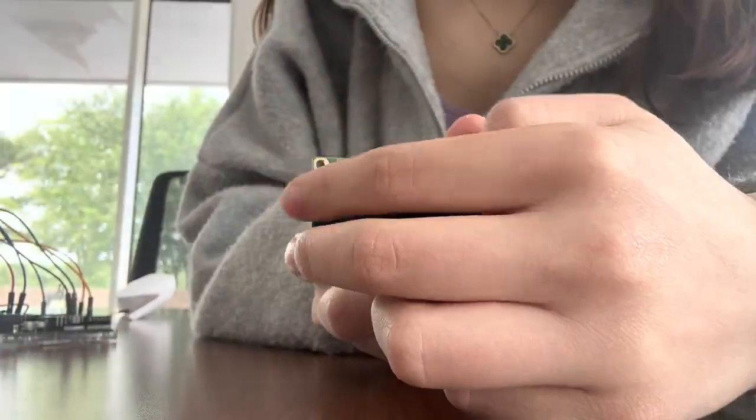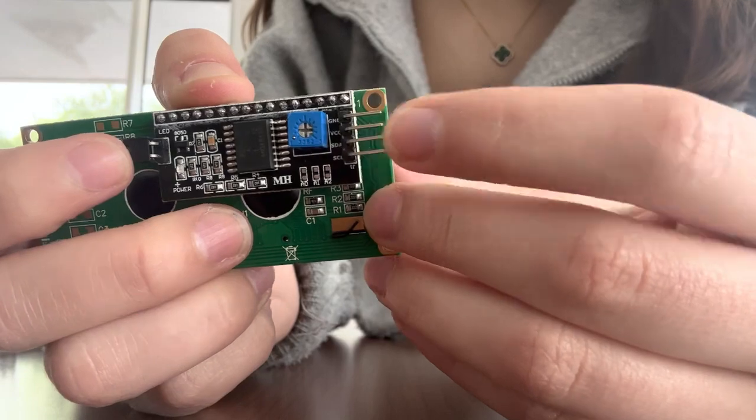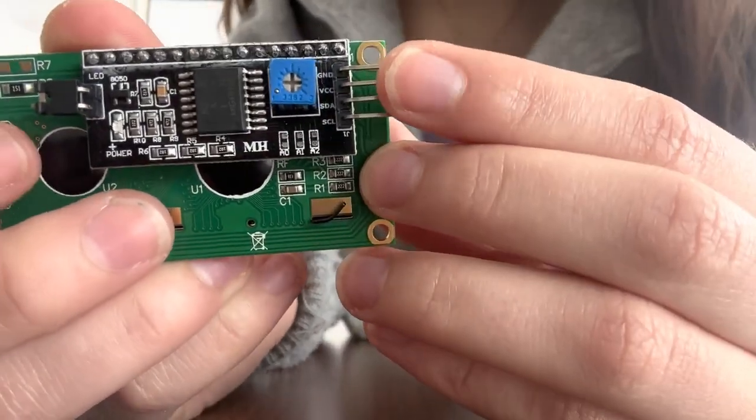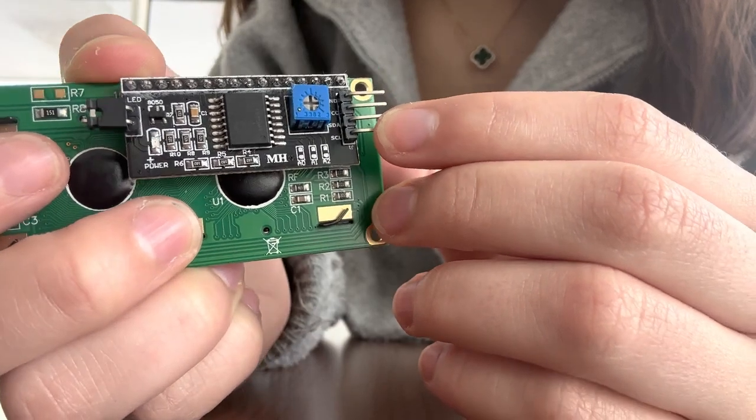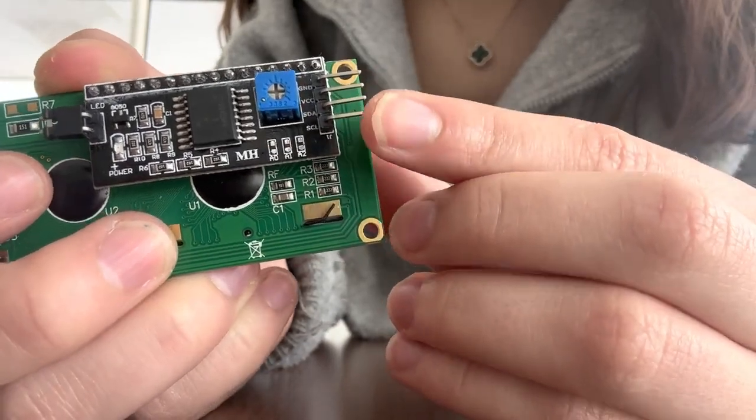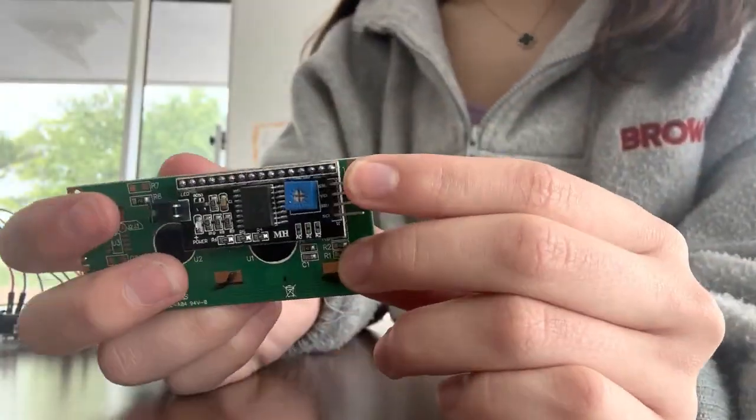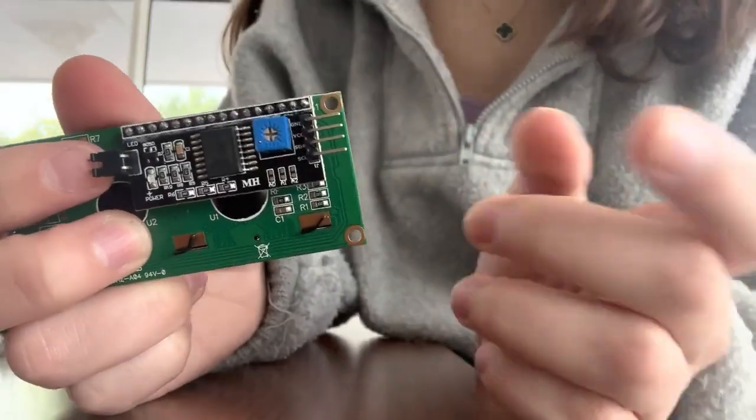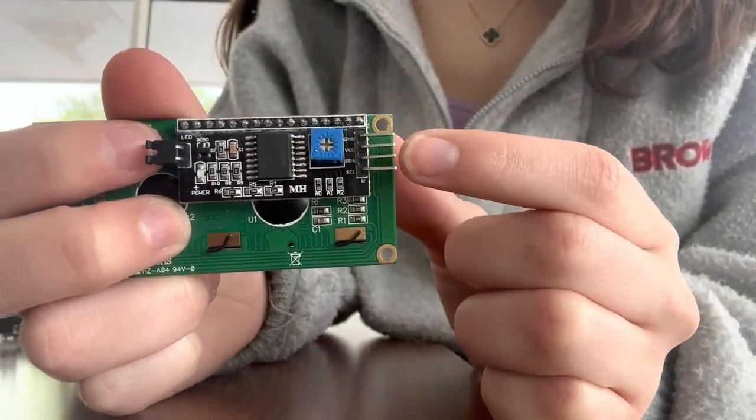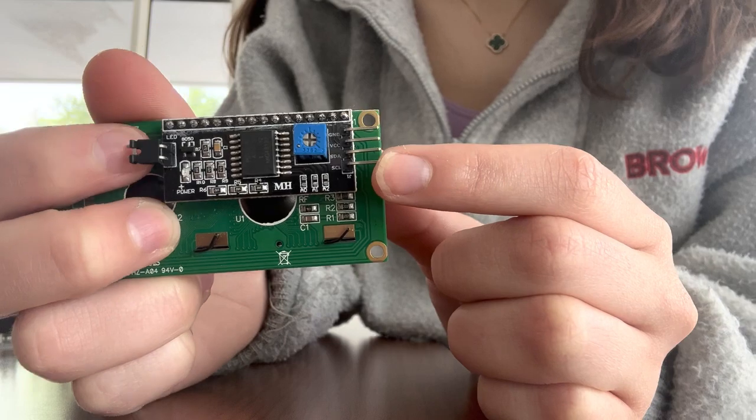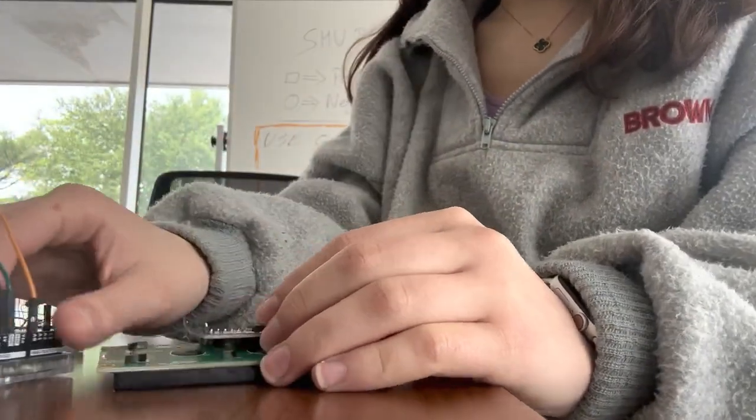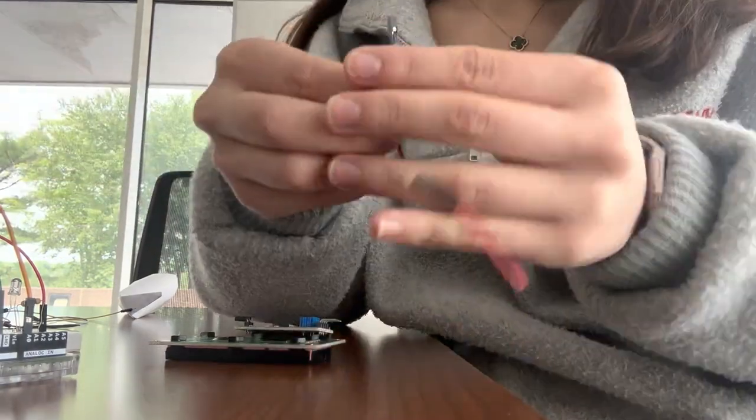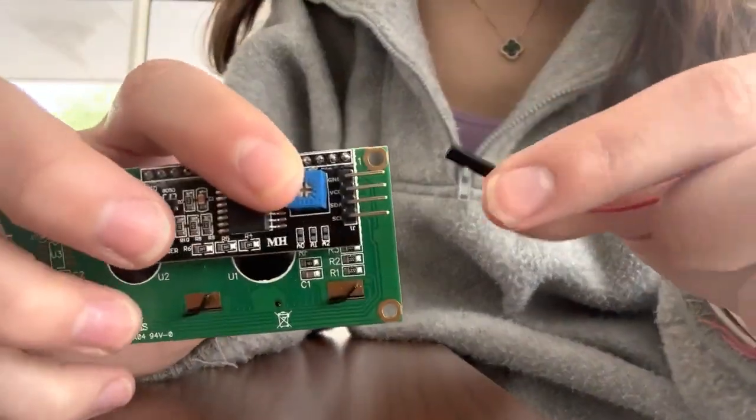On the right side, you have four outputs, and the top one says ground. Second says VCC. Third says SDA. Fourth says SCL. So we're going to connect our ground to ground, the VCC to five volt, the SDA to analog four, and the SCL to A5. So get your wires, my first wire, and I'm going to connect it to ground.